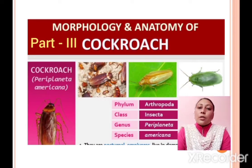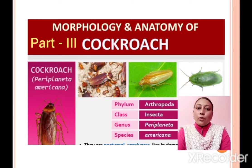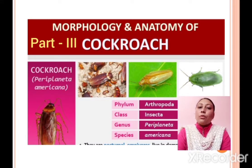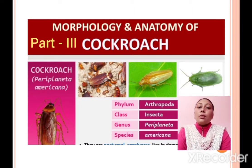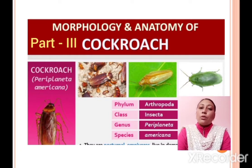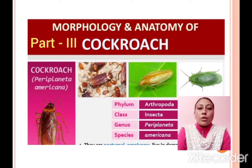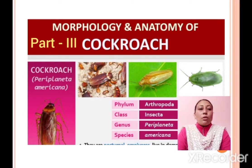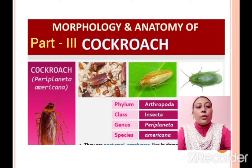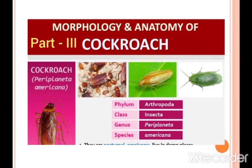Hello students. In this part of the video we will discuss the morphology, anatomy, and functions of different body systems of the insect cockroach in a brief account. In our previous section we discussed the structure, location, and functions of four main types of animal tissues: epithelial tissue, connective tissue, muscular tissue, and nervous tissue.